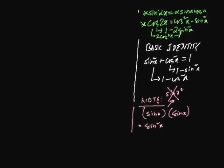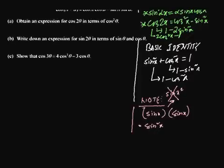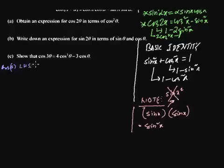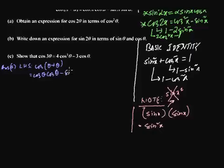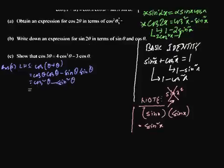Now let's do the sums. The first: we have to find an expression for cos 2 theta in terms of cos squared theta. Starting from the left-hand side, cos 2 theta means cos of (theta plus theta). Using the identity cos(a+b) equals cos a cos b minus sin a sin b, we write cos theta cos theta minus sine theta sine theta, which gives cos squared theta minus sine squared theta.